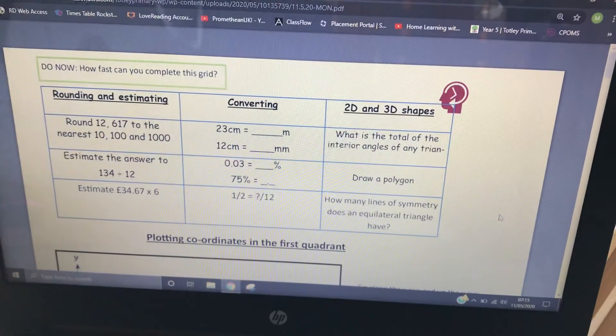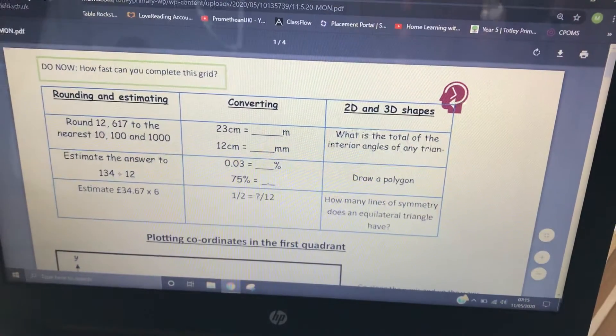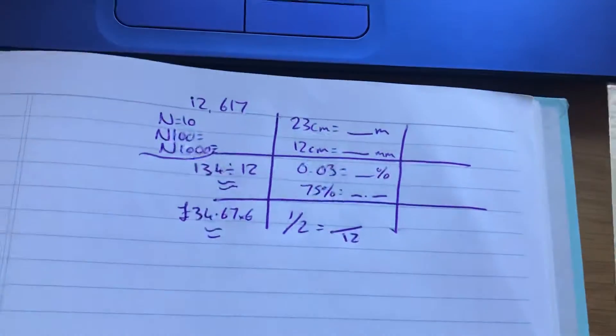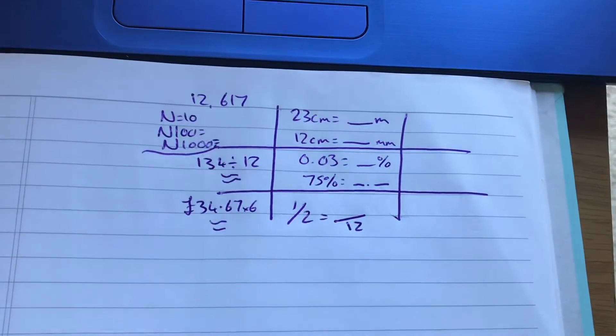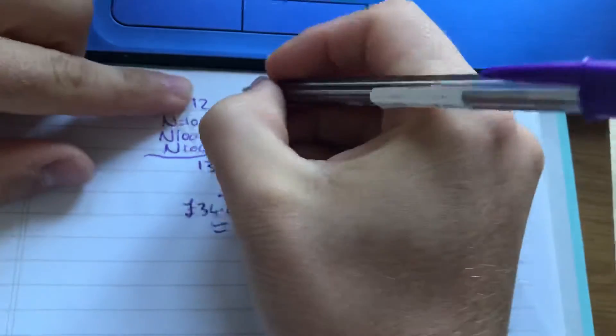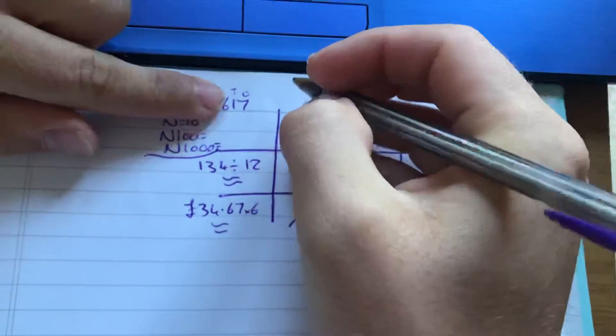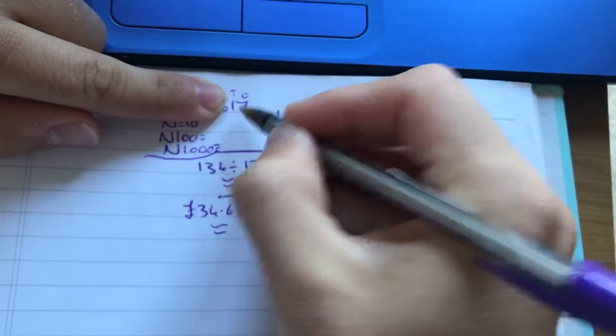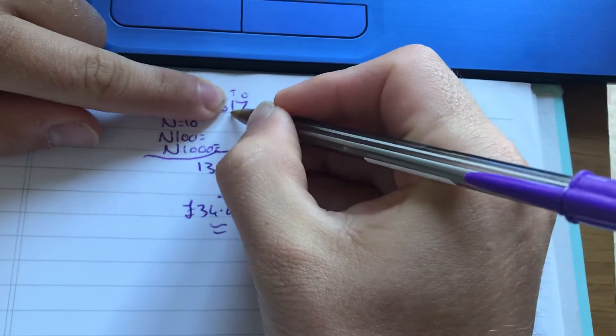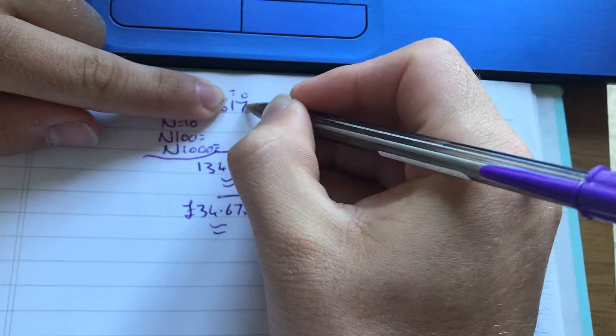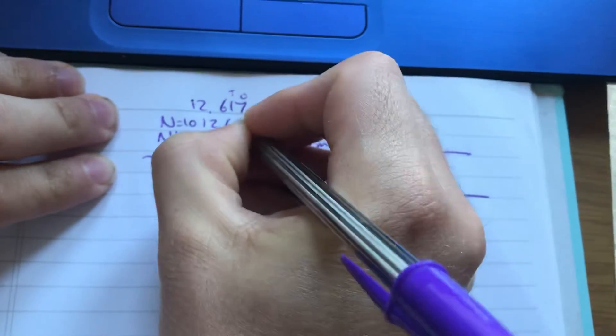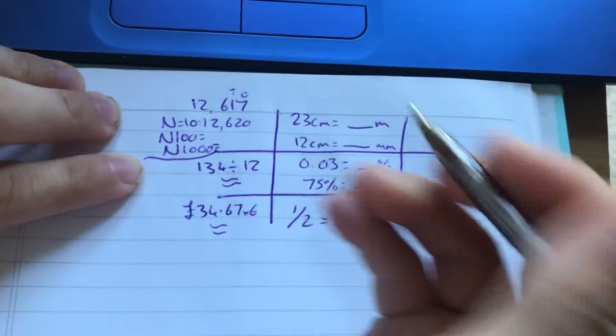So have a quick look at the do nows first, nothing's changed on here. Here we go. I've written it really tiny today. So first one, round to nearest ten, 12,617. Well, there's your one, there's your ten. Seven, nearest ten, well actually seventeen, we know that's closest to twenty. But your ten is the one, seven rounds up. So 12,620.